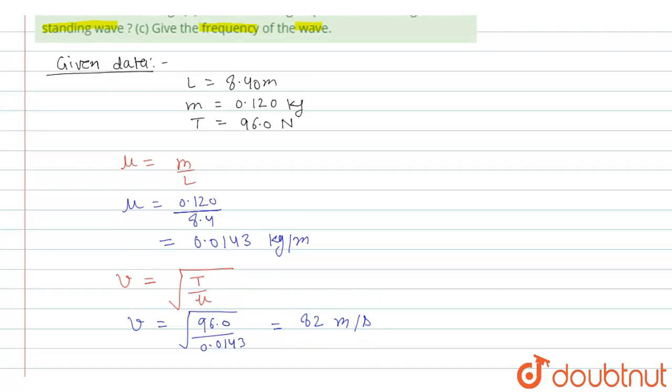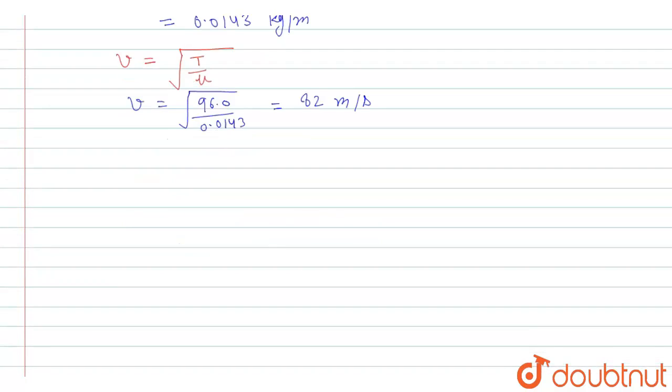Now, the formula to calculate the longest possible wavelength is given by lambda is equal to 2 into L. Therefore, this will be equal to 2 into 8.4 is equal to 15.8 meter.